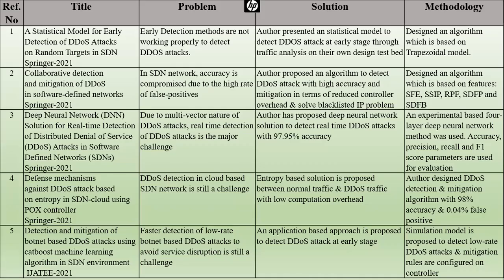Moving to current research papers — I have covered 34 to 35 research papers discussing multiple methods and problems. For each paper I will cover: the title, the problem addressed, the solution provided, and the methodology used. The first research paper is a statistical model for early detection of DDoS attacks on random targets in SDN. The problem was that early detection methods were not working properly to detect DDoS attacks, so the author proposed a statistical model. For students planning to do research, please take note.